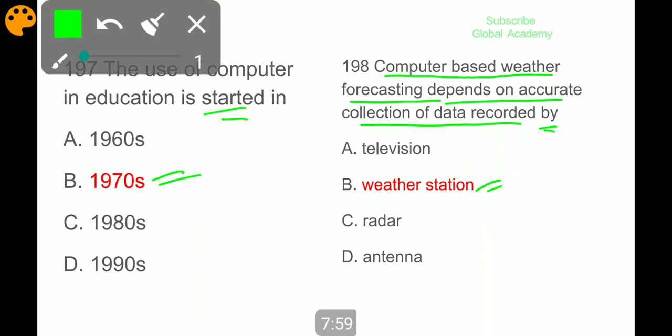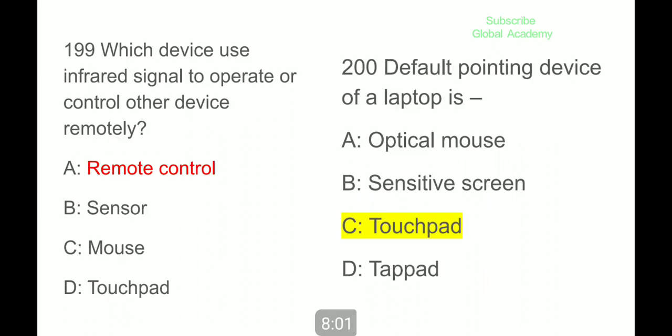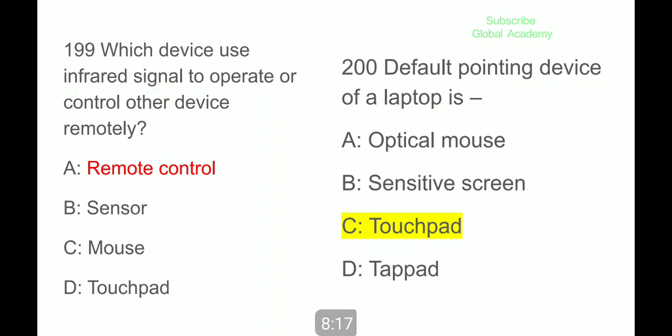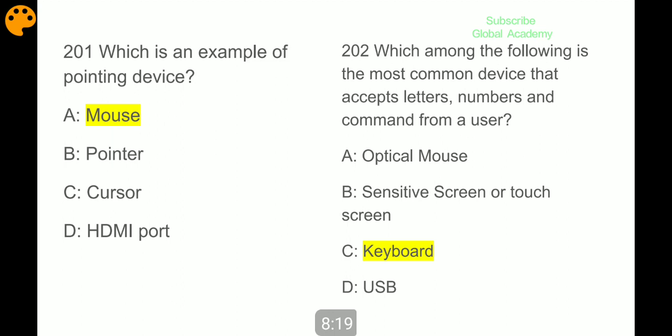Which device uses infrared signal to operate or control other devices remotely? Remote control. Default pointing device of a laptop is touchpad. Which is an example of pointing device? Mouse. Which among the following is the most common device that accepts letters, numbers, and commands from a user? Keyboard.